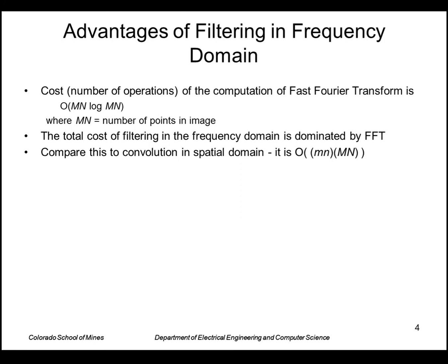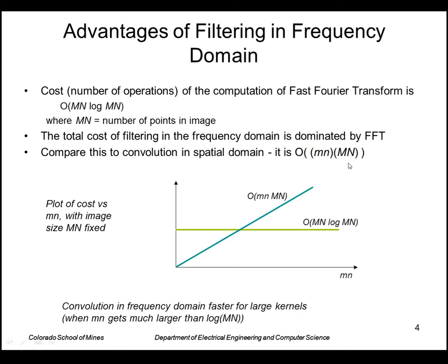Compare this to convolution in the spatial domain, whose cost is little m times little n — the size of the filter — times the number of points in the image. If we fix the image size M by N and look at how cost increases with increasing filter size, the spatial domain convolution increases linearly with filter size, whereas the cost in the frequency domain is fixed — it doesn't matter how big the filter is. So for large kernels, convolution in the frequency domain is faster.